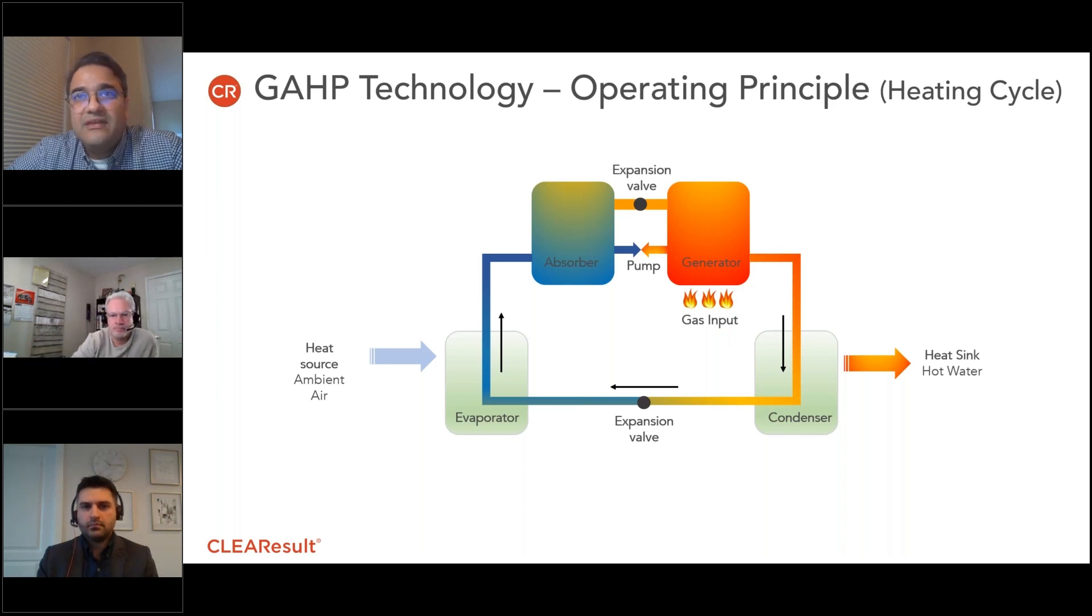There's a lot of standard stuff in this GAHP unit like a burner, a gas valve, fan, pump. There's an evaporator and a condenser.